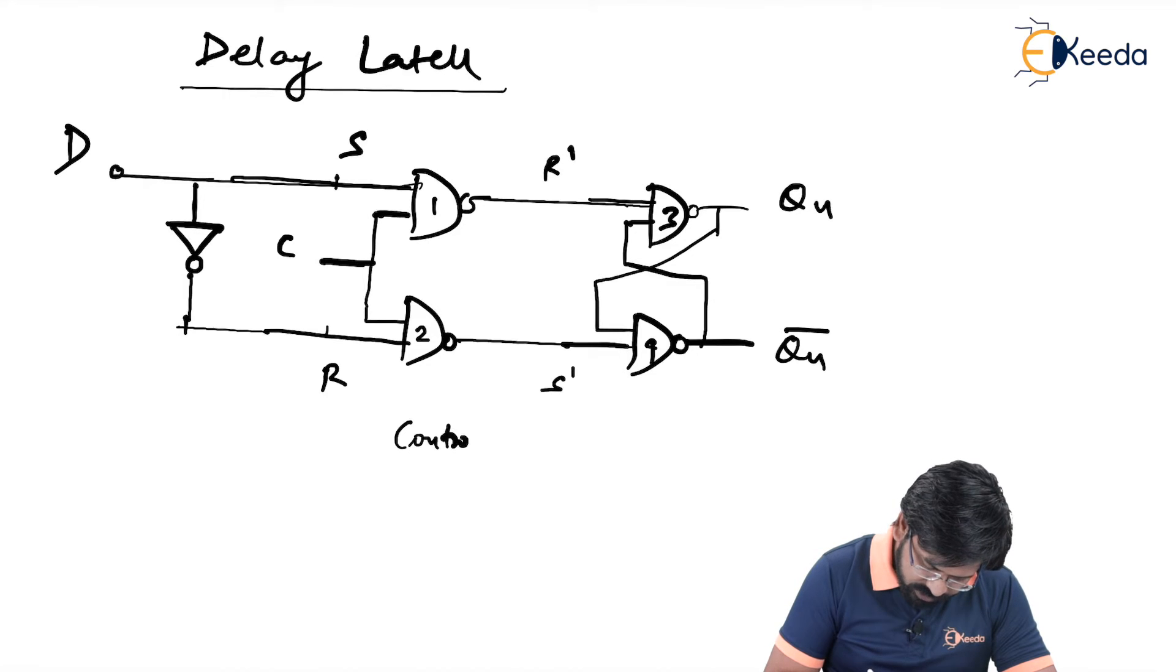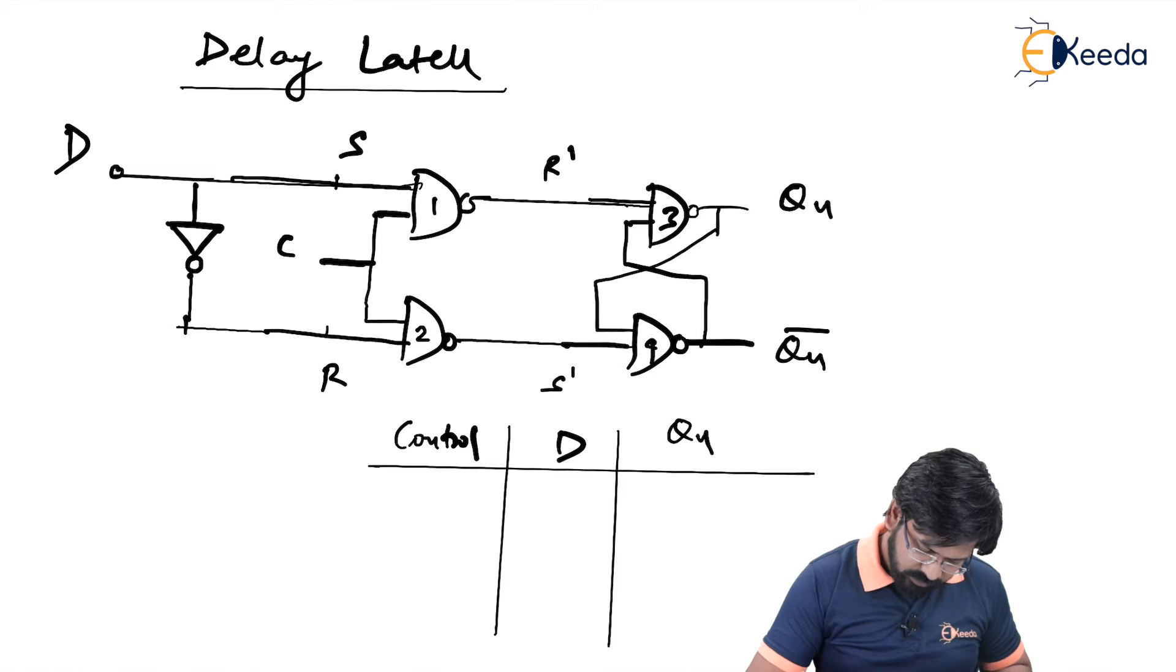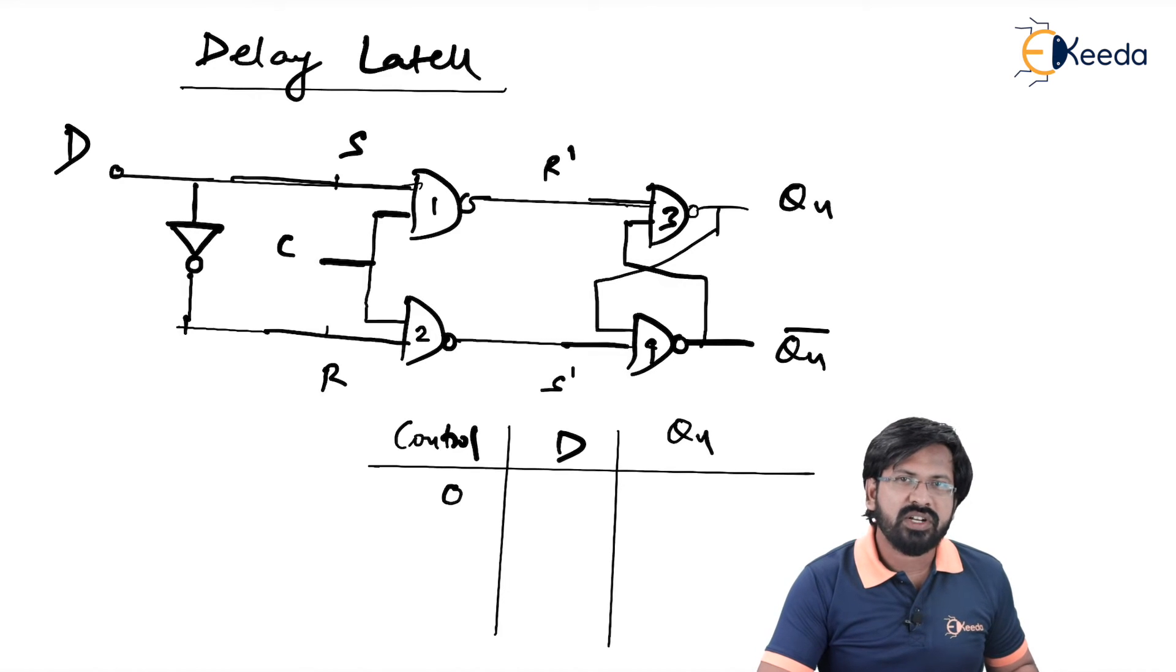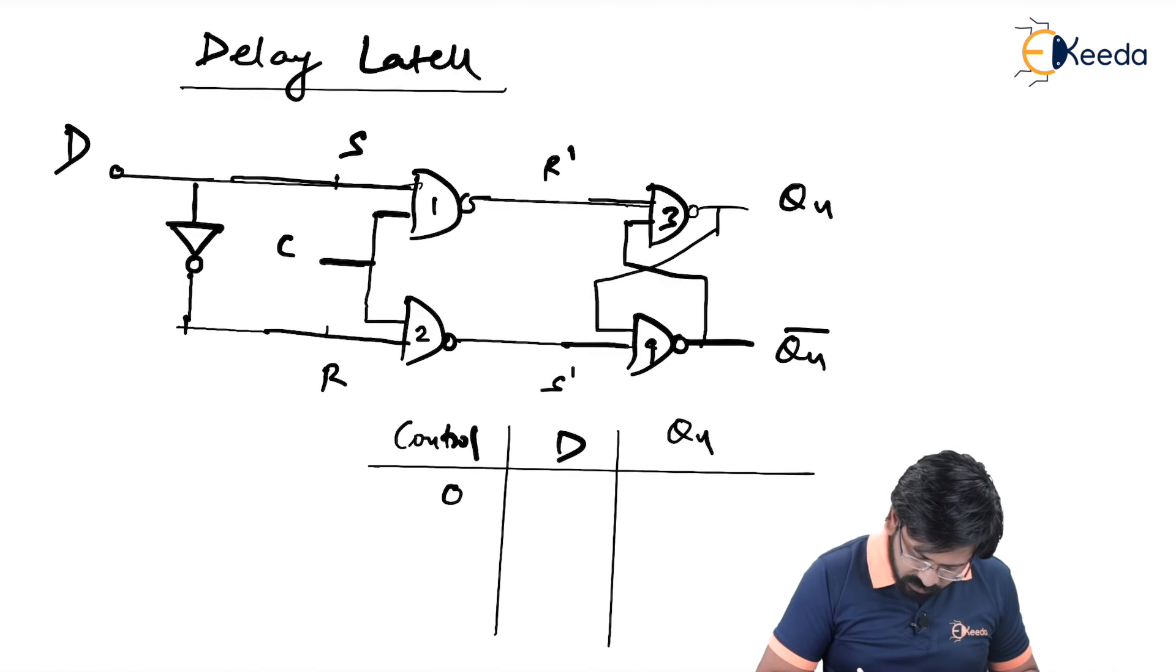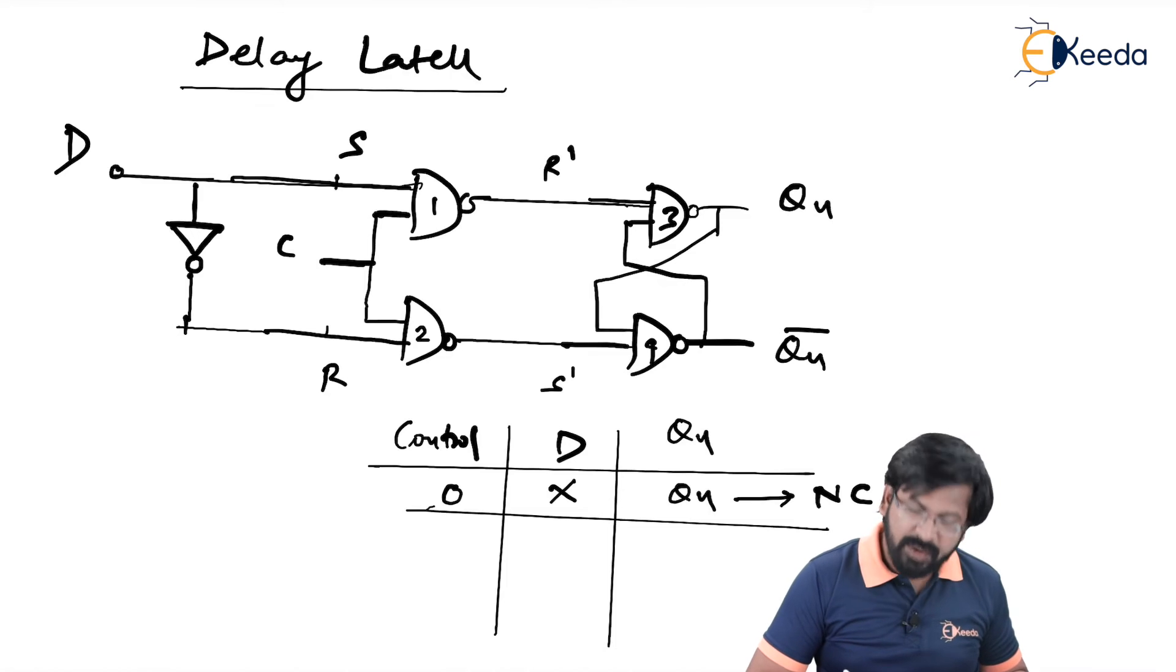So we have two inputs here. One is control input, the other input is D. We will see Qn. So when control input equal to 0, we know that when control input equal to 0, the input gets desensitized, meaning that whatever that you apply on input does not make any sense, output remains no change. Therefore, when control equal to 0, D is do not care and Qn remains Qn and this is called as no change condition. Is that right?